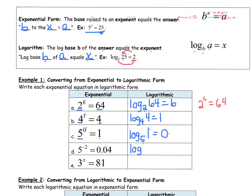So log base 5, of the answer, equals the exponent, negative 2. So 5 to the negative second power is 0.04.